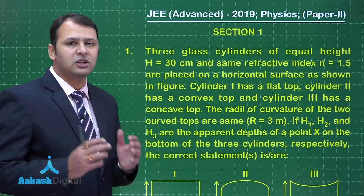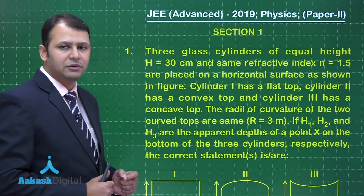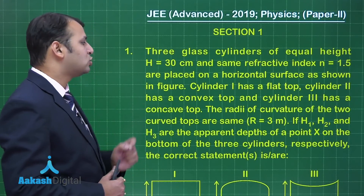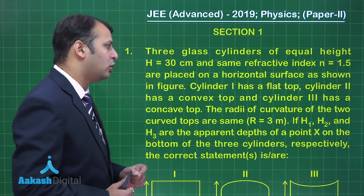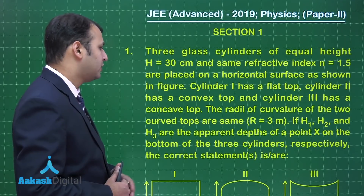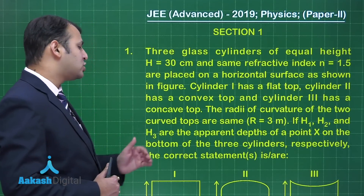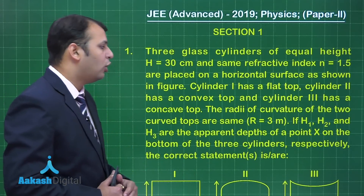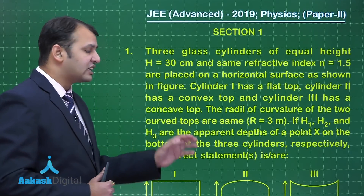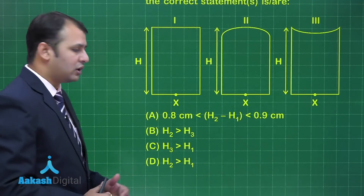The first question is from the chapter Ray Optics. As per the question, three glass cylinders of equal height 30 cm and the same refractive index of 1.5 are placed on a horizontal surface as shown in the figure. Cylinder 1 has a flat top; cylinders 2 and 3 have convex and concave tops respectively. The radii of curvature of the two curved tops are the same, that is 3 meters. If h1, h2, and h3 are the apparent depths of point X on the bottom of the three cylinders respectively, we have to find the correct statement among the four options.